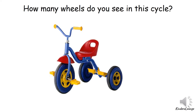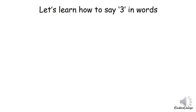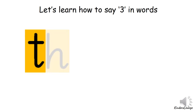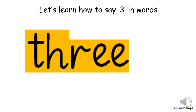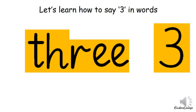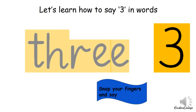How many wheels do you see on the cycle? We can see three wheels, so the next number after two is number three. Let's learn how to say three in words: T H R E E — three. Snap your fingers and say T H R E E, three. Well done, that's how we spell number three!